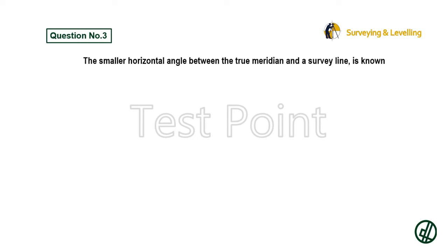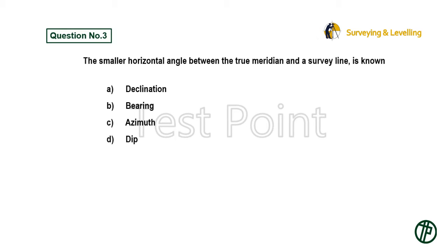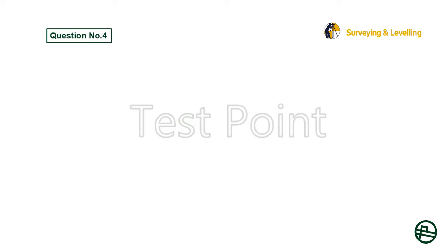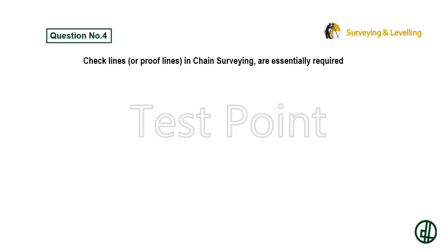Question 3: The smaller horizontal angle between the true meridian and a survey line is known as — Option A: Declination. Option B: Bearing. Option C: Azimuth. Option D: Dip. Answer is Option C: Azimuth.